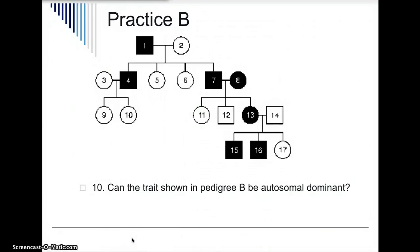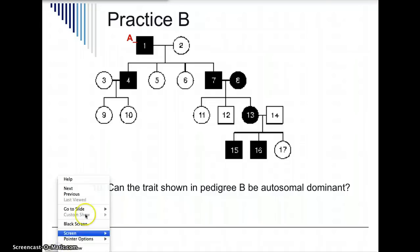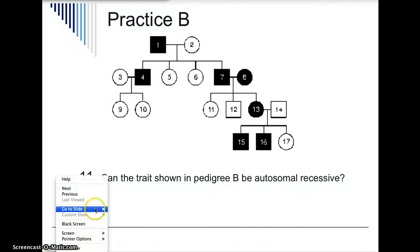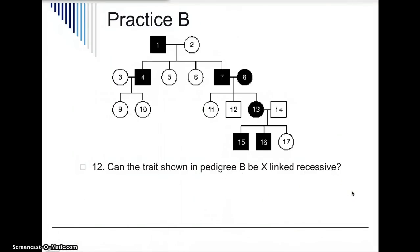Now let's go to Practice B. We're going to ask the same question: do unaffected parents have affected offspring? We have affected offspring, but they have one affected parent, so that doesn't help answer the question. We also have an affected offspring who has affected parents. So the answer to that question is no — there are no affected offspring with unaffected parents in this pedigree. This is probably a dominant trait. Can it be autosomal recessive? Again, there are no unaffected parents with affected offspring, so the answer is probably no. Is it X-linked recessive? We already know it's a dominant trait, so it's not X-linked recessive. Both sexes are equally represented in having the trait, so the answer is probably no — it's probably not X-linked recessive.